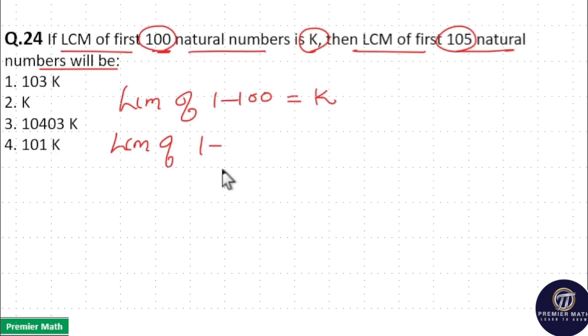I will write it as 1 to 100 and 101 to 105. Here LCM of 1 to 100 is K. Now we have to find out what is LCM of 101 to 105. That is 101, 102, 103, 104, and 105 are included in these numbers.